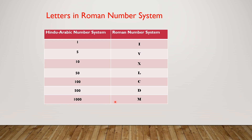Let's go through it one more time, but in the opposite way. I is represented by one. V is represented by five. X is represented by ten. L is represented by fifty. C is represented by a hundred. D is represented by five hundred. And M is represented by one thousand. Are you ready for a quiz?